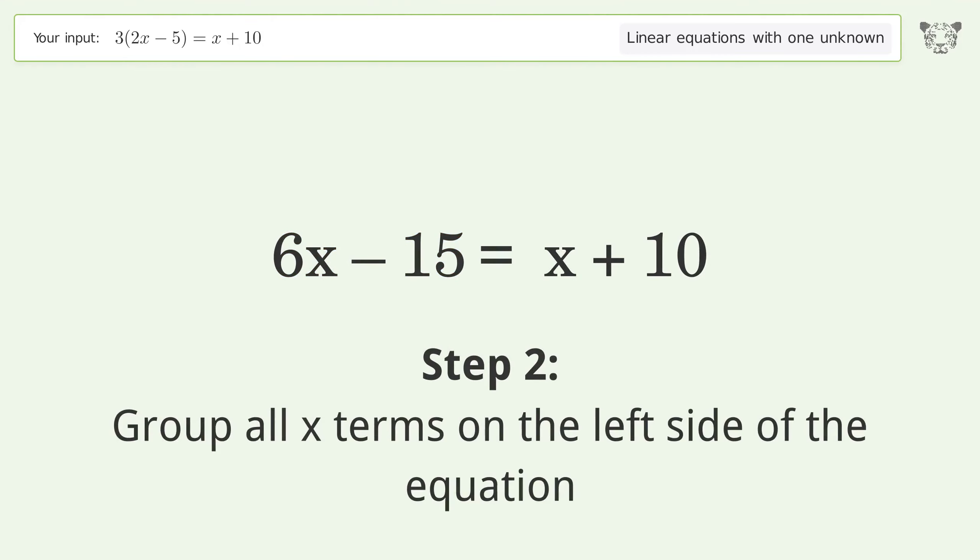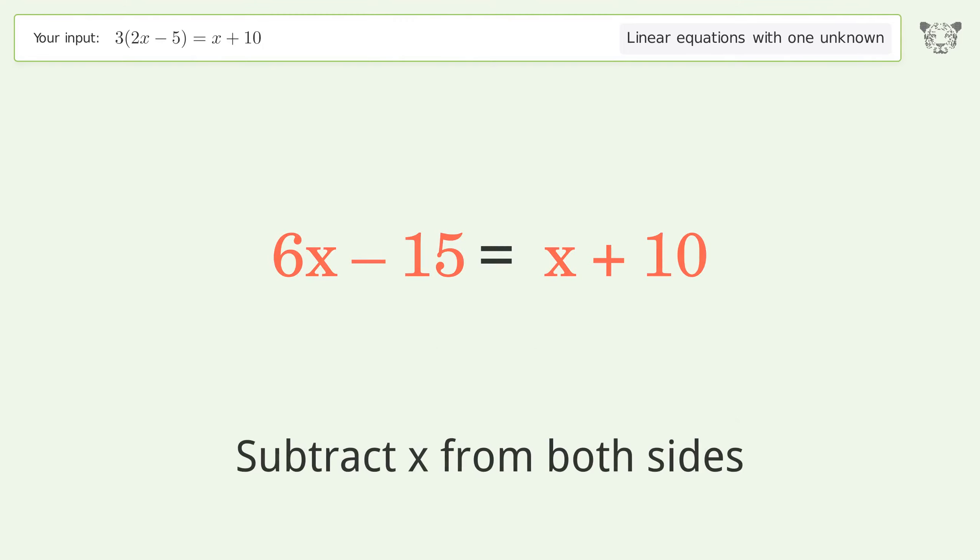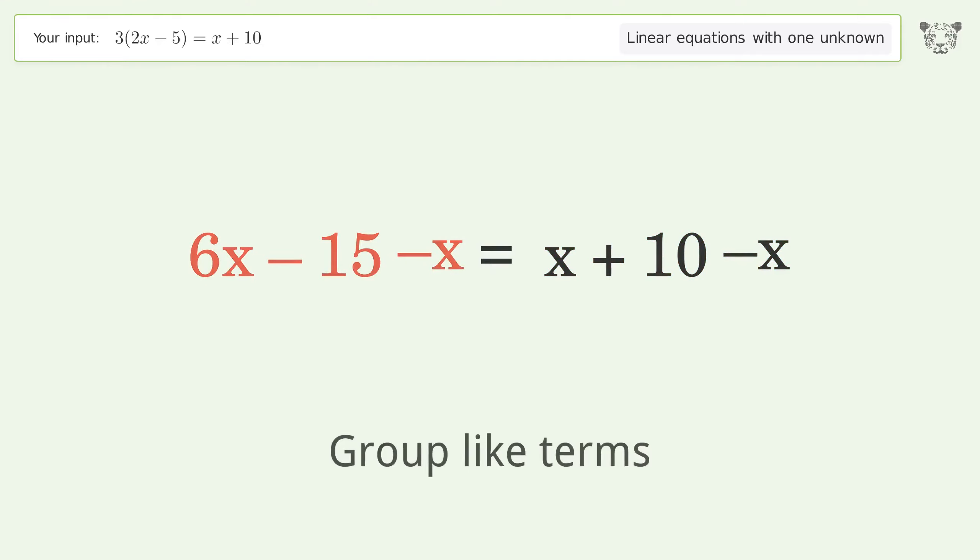Group all x terms on the left side of the equation. Subtract x from both sides. Group like terms. Simplify the arithmetic.